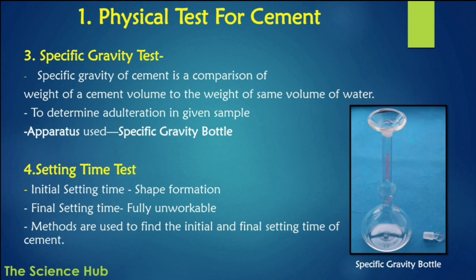In the specific gravity test, the volume of cement is compared to the volume of water to determine particle density in the given sample. The apparatus used is a specific gravity bottle. For setting time, the initial setting time refers to when the cement begins shape formation, and the final setting time is when it becomes fully unworkable. These methods are used to find the initial and final setting time of cement.